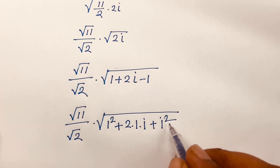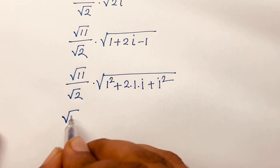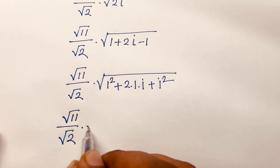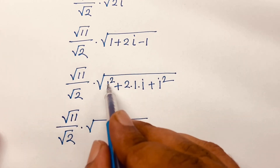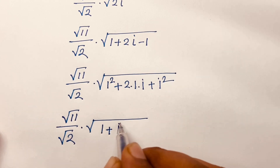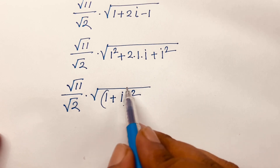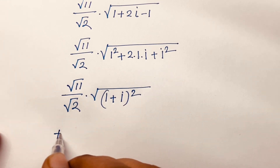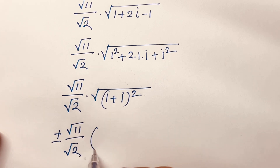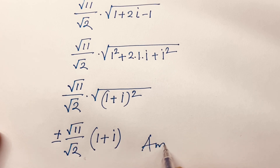We know that i squared equals minus 1. Then, using the identity a squared plus 2ab plus b squared equals (a plus b) whole squared, the square root is cancelled. So we find the final answer: plus or minus square root 11 over square root 2, times (1 plus i).